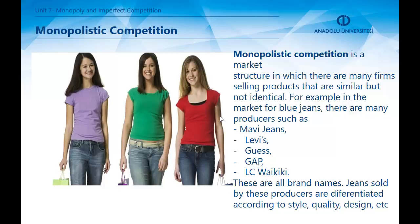Different from a monopoly and similar to perfect competition, a monopolistically competitive market typically has many sellers because there are low barriers to entry. New firms will enter easily when they observe existing firms enjoying positive profits. For example, in the market for blue jeans there are many producers such as Mavi Jeans, Levi's, Gas, Gap, and Sivakiki — all differentiated by style, quality, and design. Levi's entered the Turkish market in 1986 as a popular brand, enjoyed high profits, which attracted new entrants, and Mavi Jeans entered in 1991.